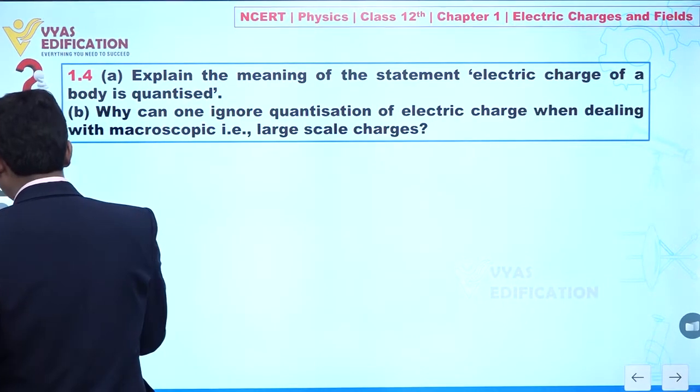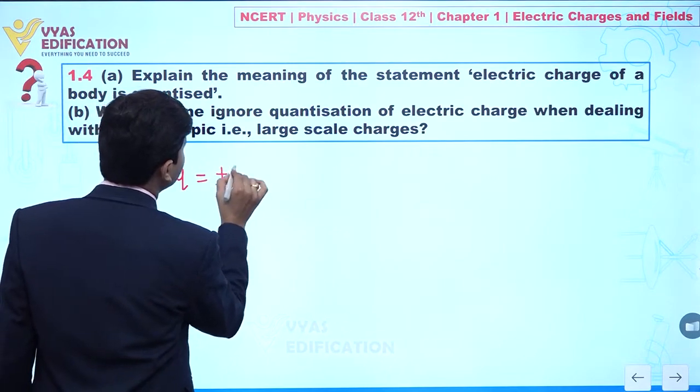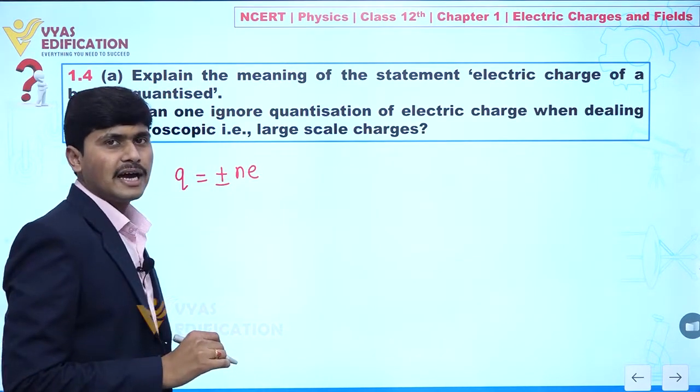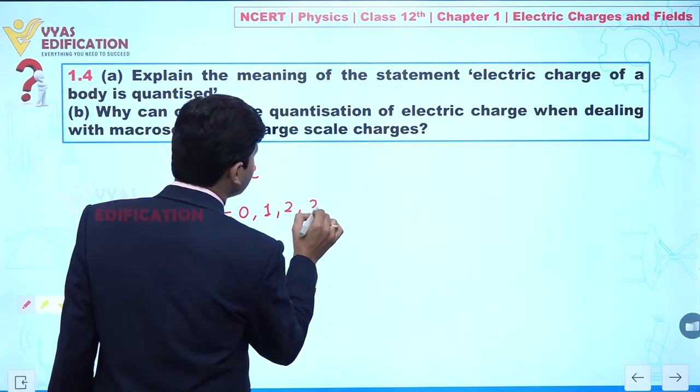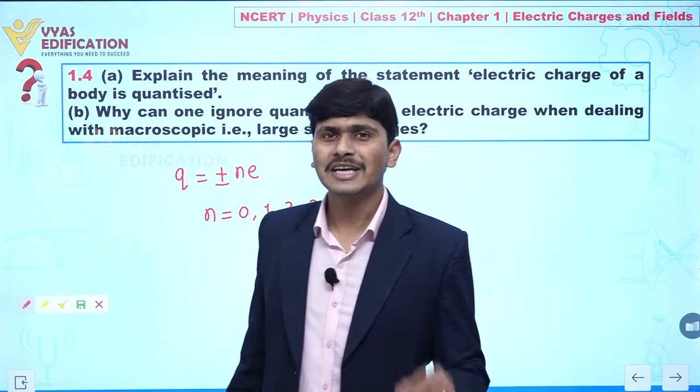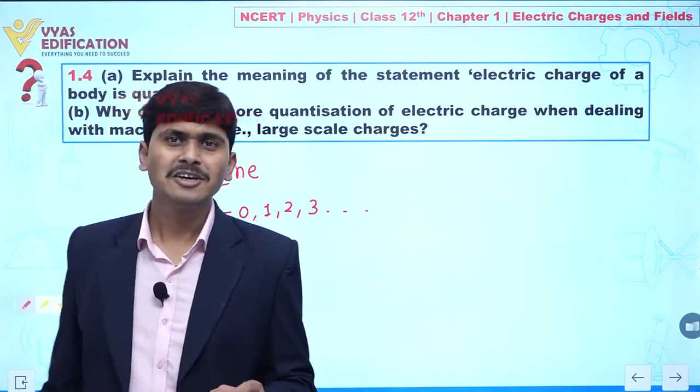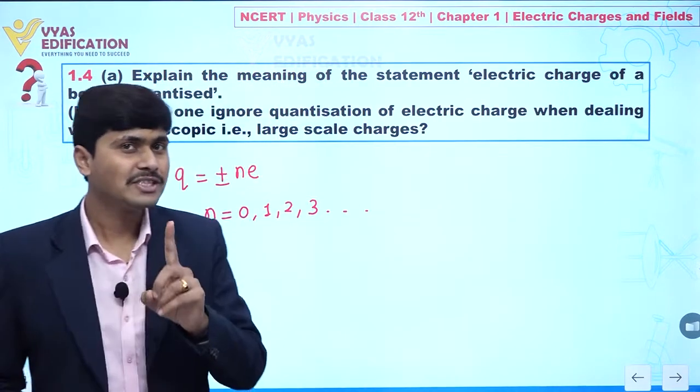Mathematically, we can represent quantization of a charge Q, this should be equal to plus minus ne. And here we can write value of n, this is equal to 0, 1, 2, 3 and so on. Always remember, we will not find value of n in fraction, because charge always exists multiple integral.